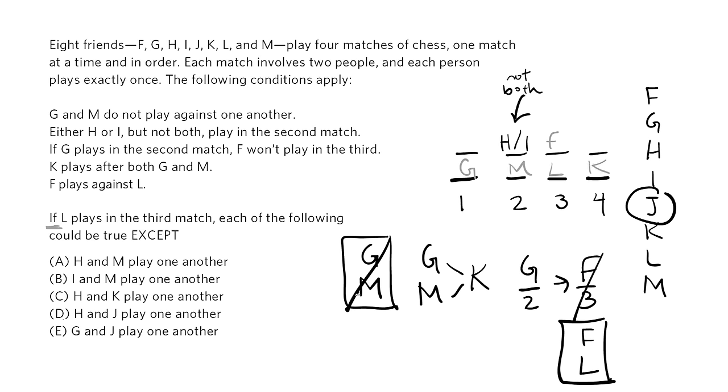We're asked which answer could not possibly be true. That means we need the one answer that must be false. We should expect that the work we've already done makes that answer obvious. There's no reason A, B, C, or E have to be false, and D is the correct answer. There's no place for H and J to play one another.